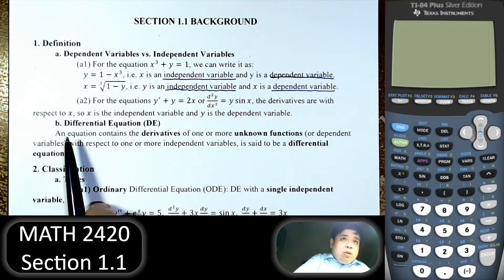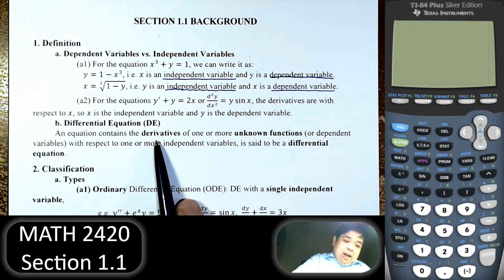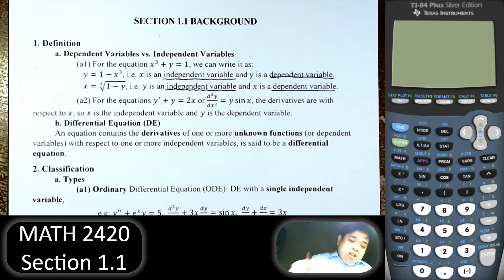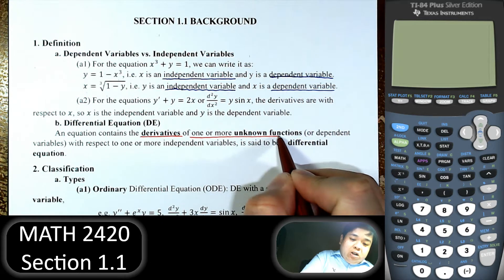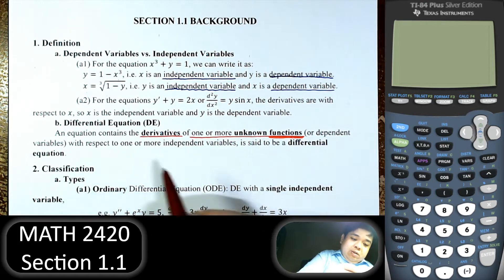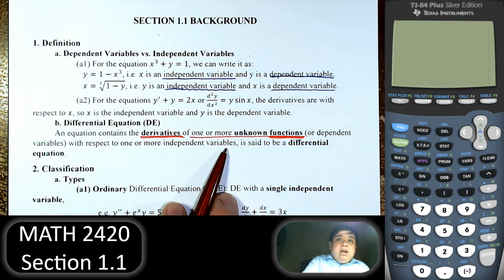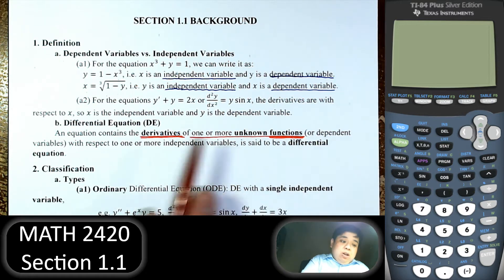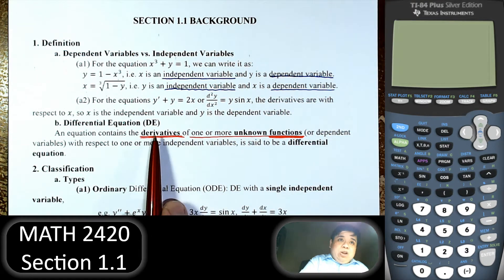Definition of differential equation: an equation that has a derivative in it is a differential equation. To be more precise, we have to have the derivative of one or more unknown functions — so the differential equation is solved for a function. It must have a derivative in it with respect to one or more independent variables. We may have more than one independent variable and more than one dependent variable, and when we solve for the dependent variables, those functions or equations are solutions to the differential equation.